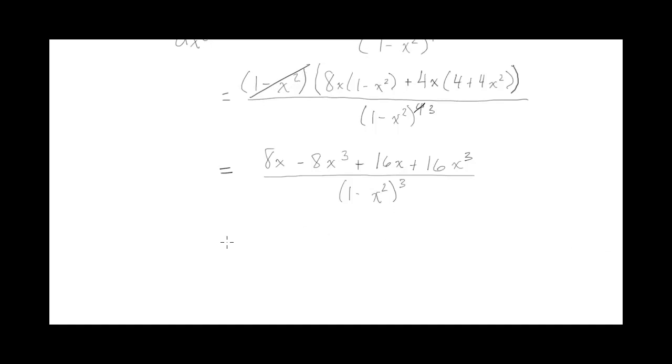Then there's some like terms in the top of the numerator. So 24x plus 8x cubed, all divided by 1 minus x squared cubed. So that's the second derivative of that original function y.